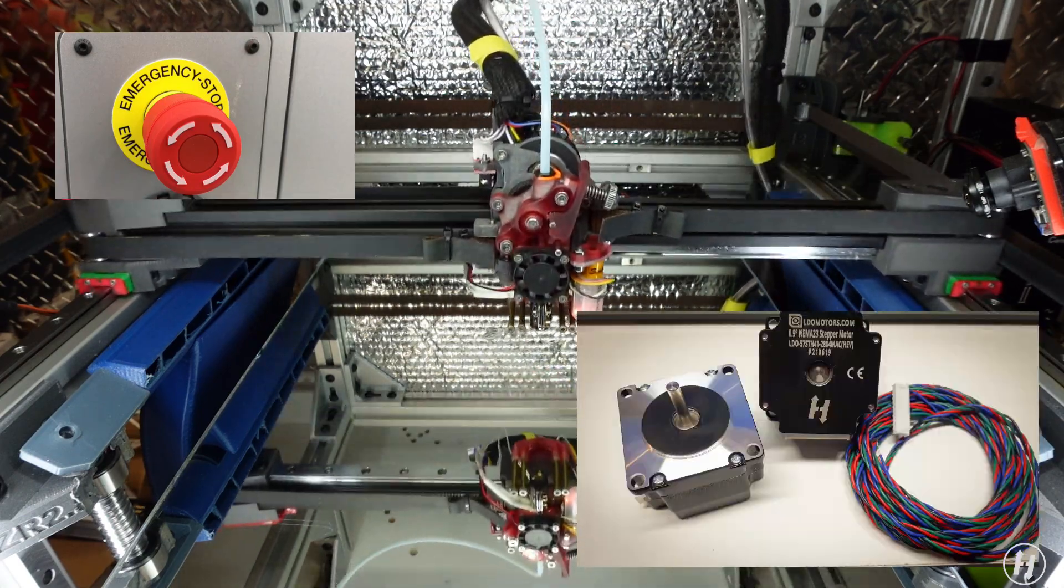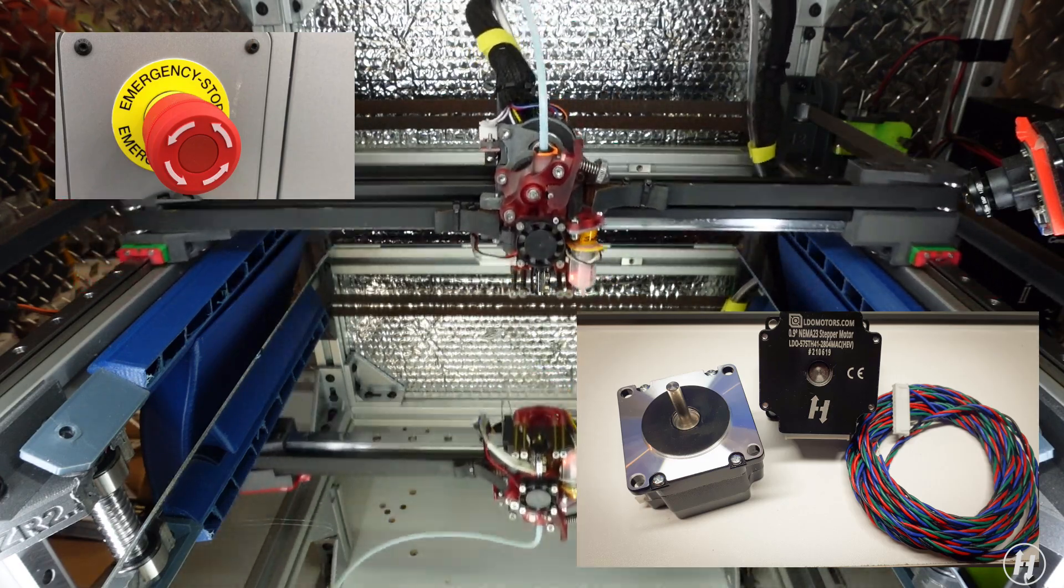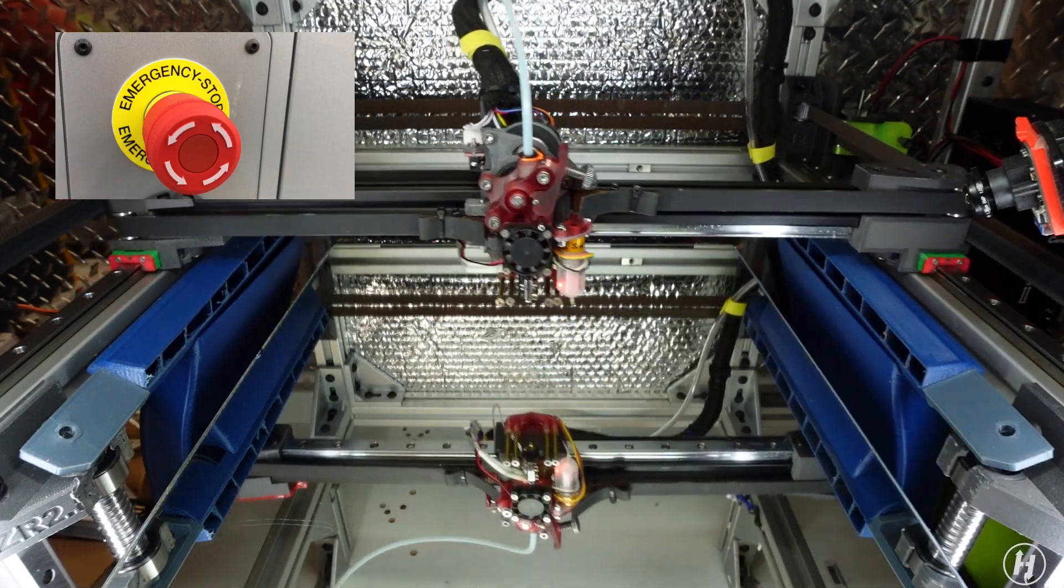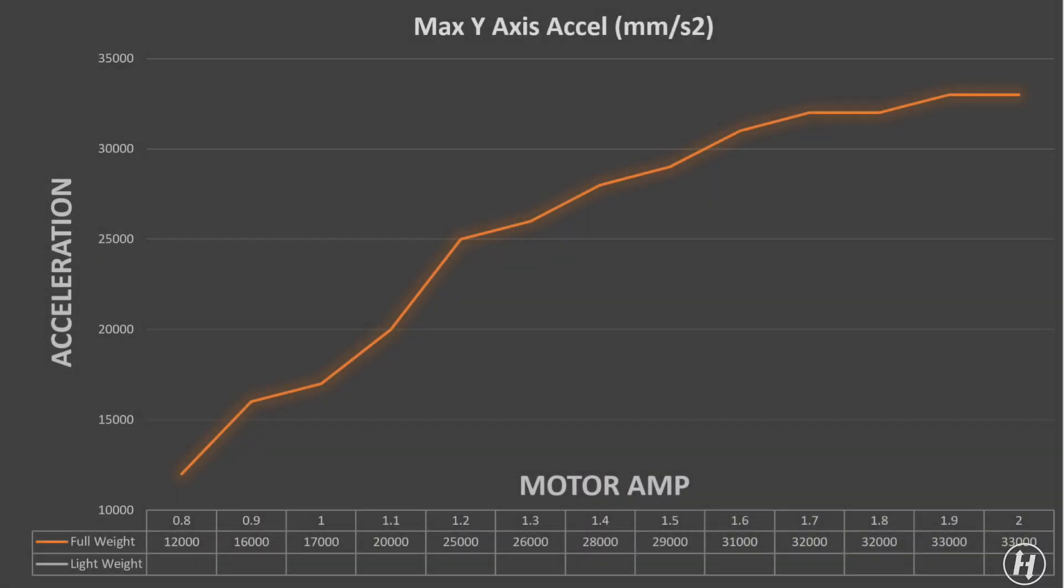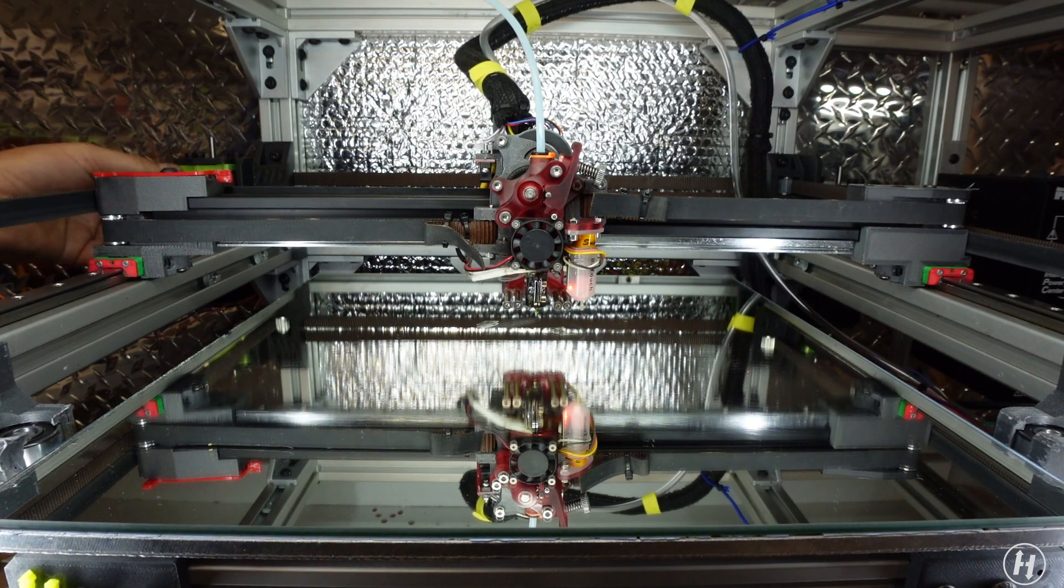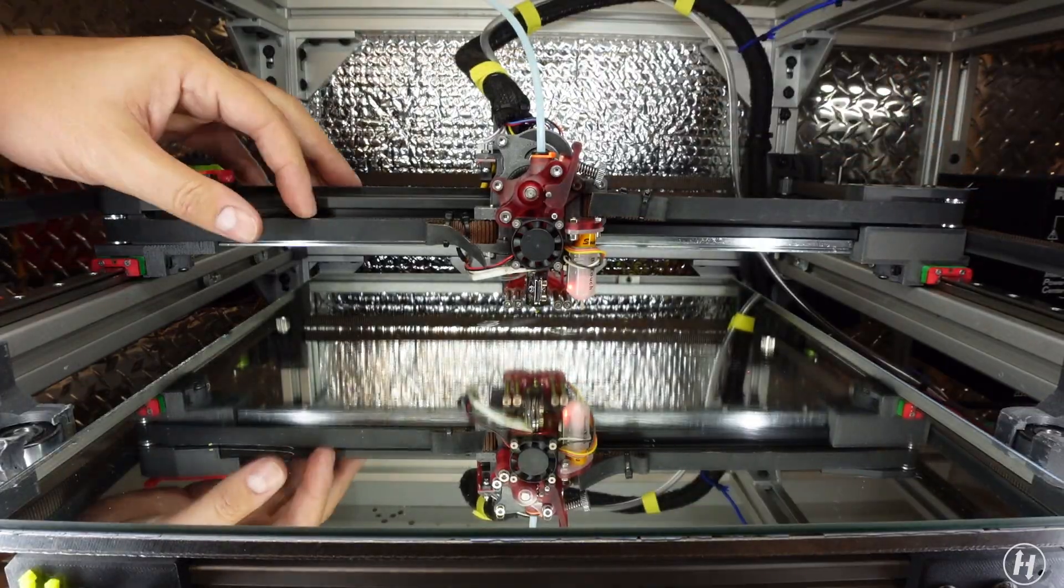I'm using for this test the LDO Heavort NEMA 23 motors for which you can find the specs here below. I repeated this test several times with different motor amp values ranging from 0.8 amp to 2 amps. Now that we have our baseline data, let's remove this X-axis and modify it.